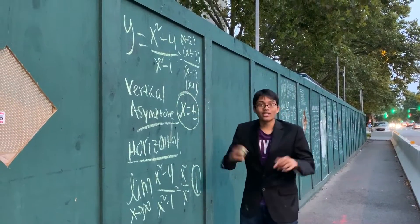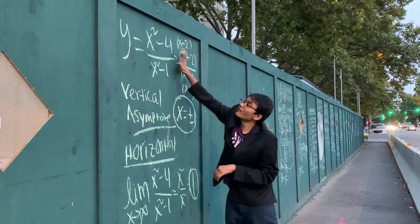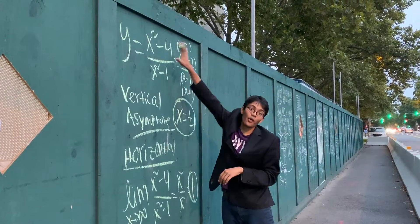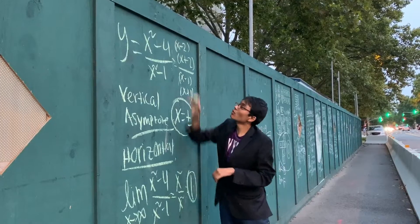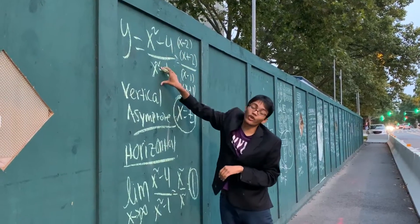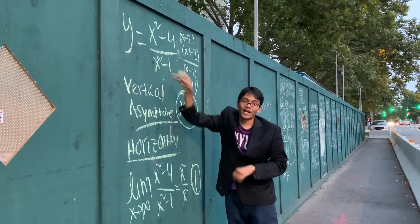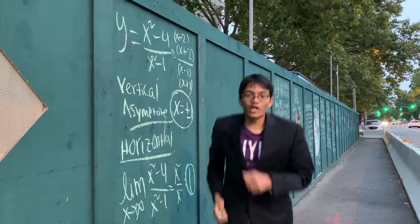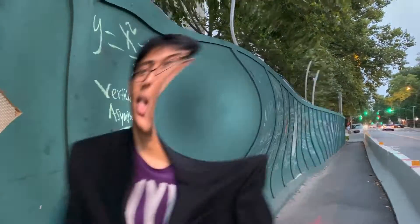Those are the two vertical asymptotes and the single horizontal asymptote of the function y equals x squared minus 4 over x squared minus 1. Thanks for watching — sponsored by Brilliant.org.